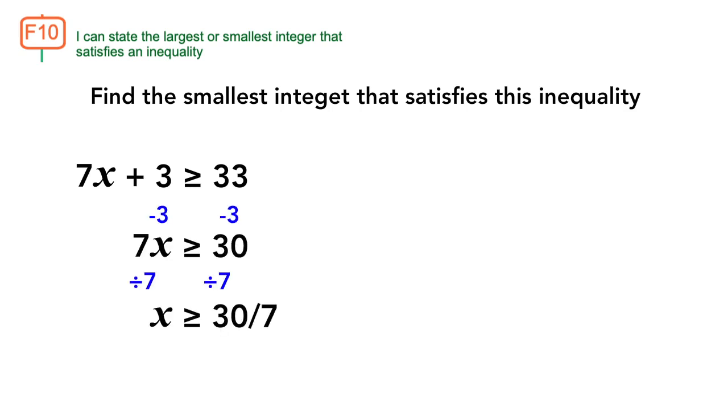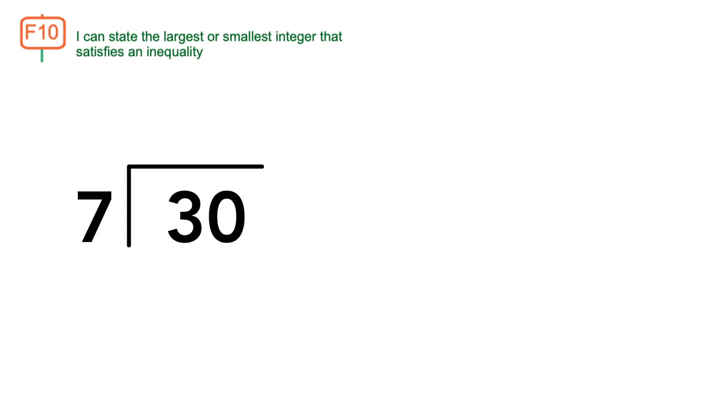We therefore get x is greater than or equal to 30 over 7. As fractions can sometimes produce long decimal values such as this one, which equals 4.285714285 and so on. To find the closest integer, change the improper fraction into mixed fraction. How many 7s fit into 30? We get 4 remainder 2. Therefore, we get this fraction.